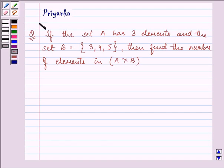Hi and welcome to the session. I am Priyanka and let us discuss the question together. It says, if the set A has three elements and set B has elements that are 3, 4, 5, then find the number of elements in A cross B.